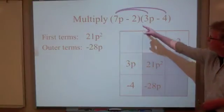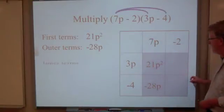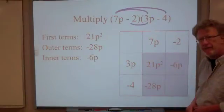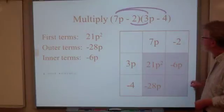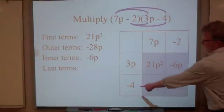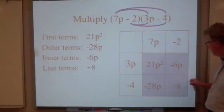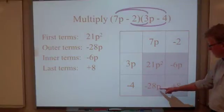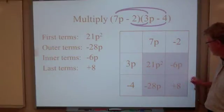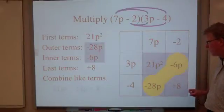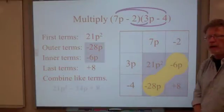And then we have our inner terms. The negative 2 and the 3p. And our inner terms are going to yield a product of negative 6p. And then, of course, our last terms, the negative 2 and the negative 4. The product is going to go in this cell. And that's a plus 8. And then, of course, we have to combine like terms our variables with a p. And we end up with 21p squared minus 34p plus 8.